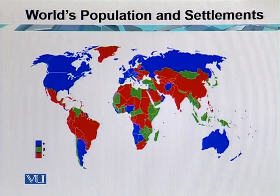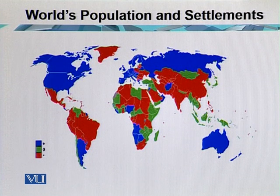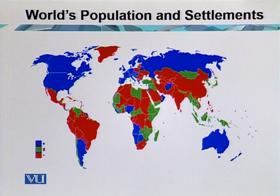This map of the world shows positive immigrant areas and negative immigrant areas. Positive immigrant areas belong to North America, Europe, Russia, Australia, and some parts of Africa and a few countries in South America.